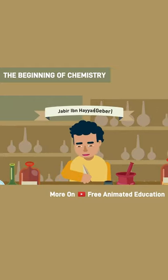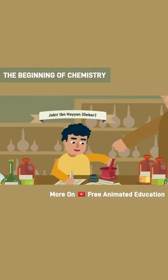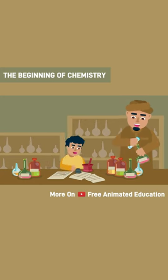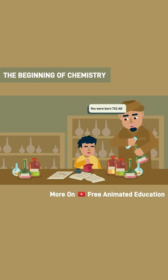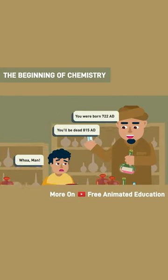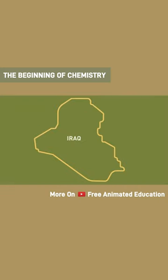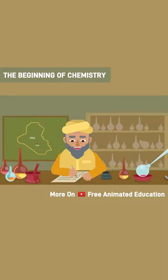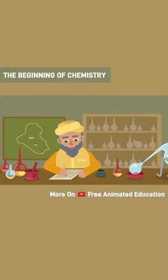Jabir ibn Hayyan, or Jibba as known by the West, was the son of a druggist. He lived from 722 AD to approximately 815 AD. He spent most of his time in Kufa in Iraq and scientifically systematized chemistry.